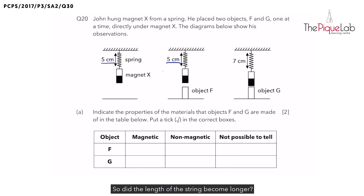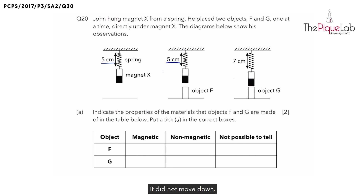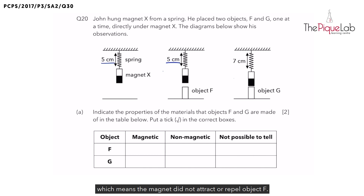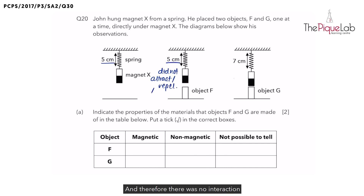Did the length of the spring become longer? No. Did the length of the spring become shorter? No. So Magnet X did not move up and it did not move down — it remained in its same position, which means the magnet did not attract or repel Object F.